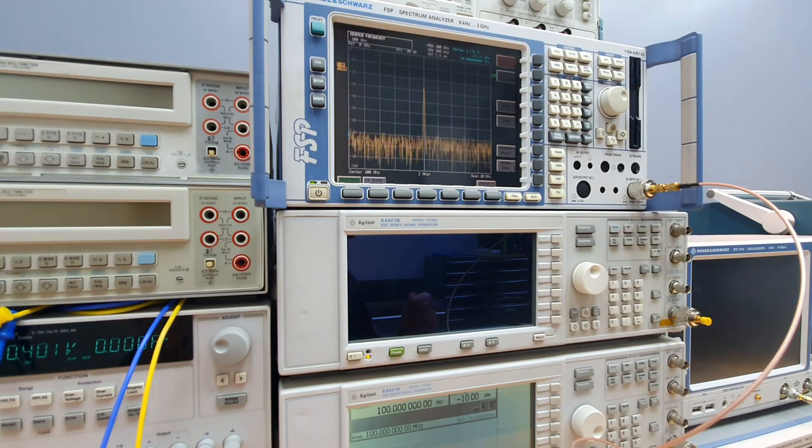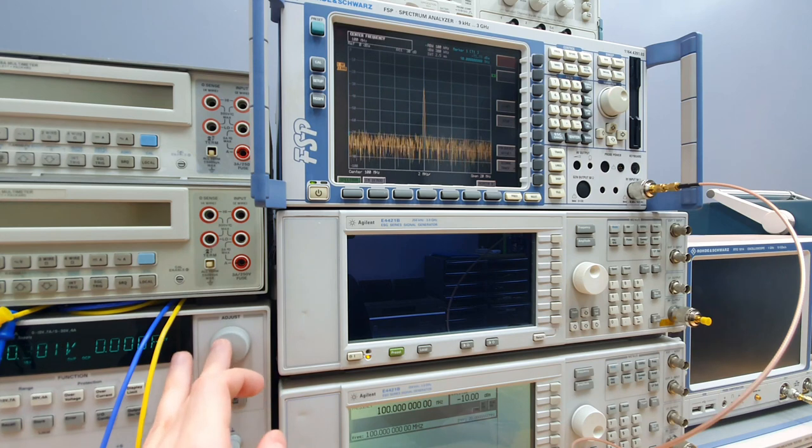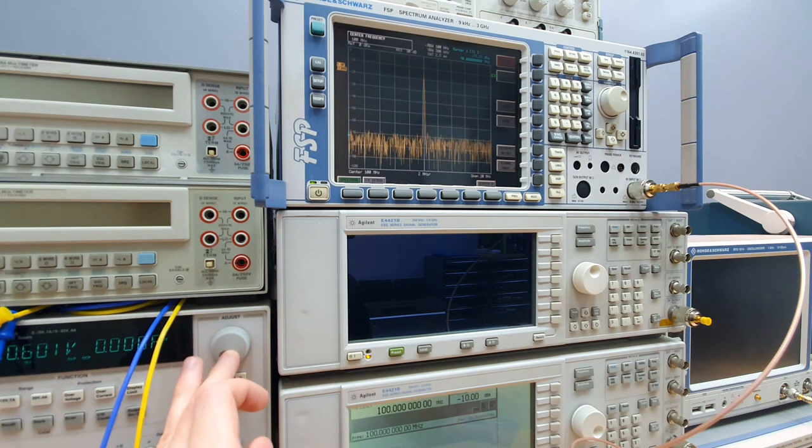This switch is actually a voltage-controlled attenuator, guys, and we can see it here. Changing the biasing current, we can change the attenuation amount. Pretty nice. It can be used as an amplitude modulator.